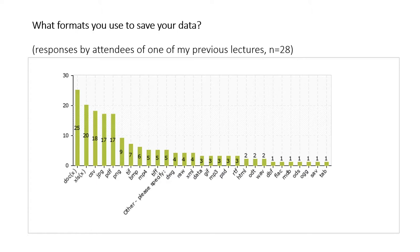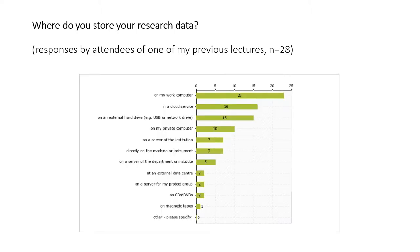Let's see your responses. In your case it's quite similar: Word files in first place, then PDFs, then Excel, then comma-separated values — the CSV file. The third question was: where do you store your research data? That's a very important one.